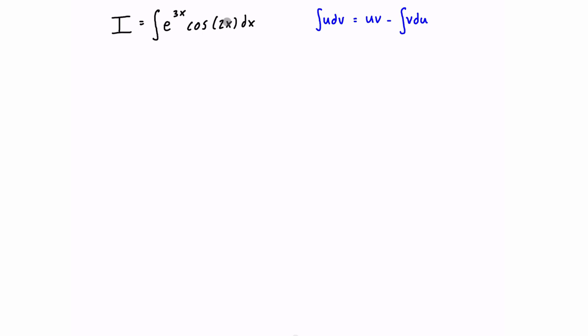This is a special case, and I'll show you why. There's a little bit of a trick that we do in the second step, or the second iteration of the integration by parts operation, and you'll see why in just a second. We're going to be using the integration by parts formula, which is right here. Let's get started.